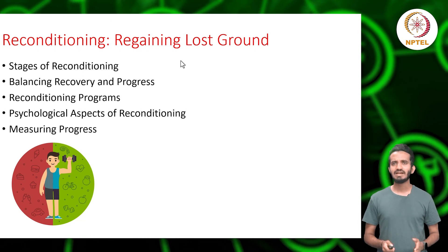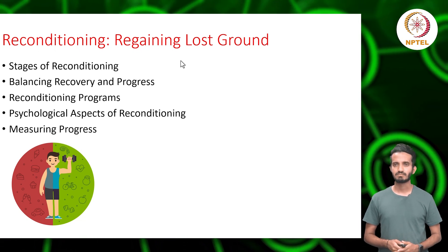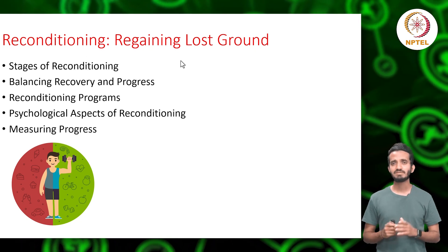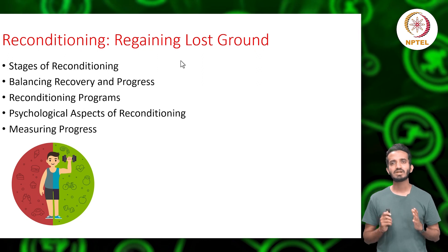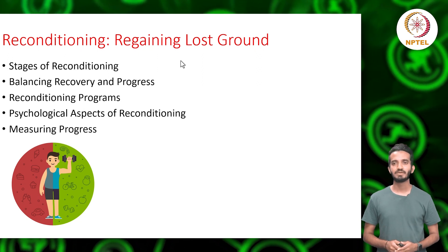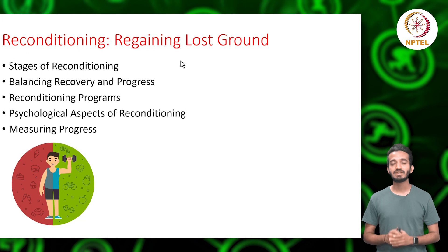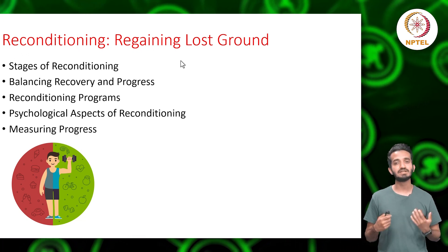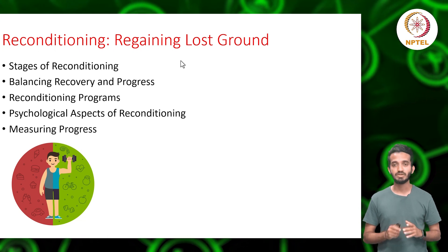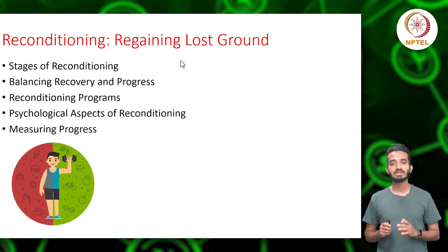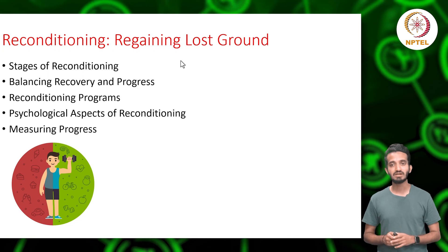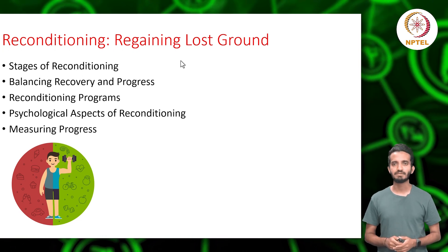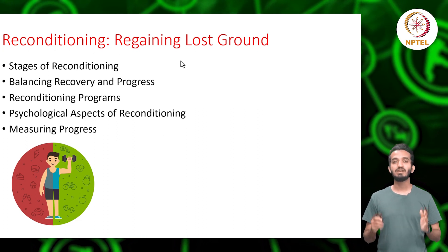As one progresses and feels more comfortable, they enter the intensification stage. This stage is about incrementally ramping things up — introducing more challenging exercises, but doing so gradually to ensure the body isn't overwhelmed. Diversity is also introduced during this stage, incorporating various exercises to keep the regimen stimulating, challenge different muscle groups, and ensure holistic development. The journey culminates in the peak performance stage.